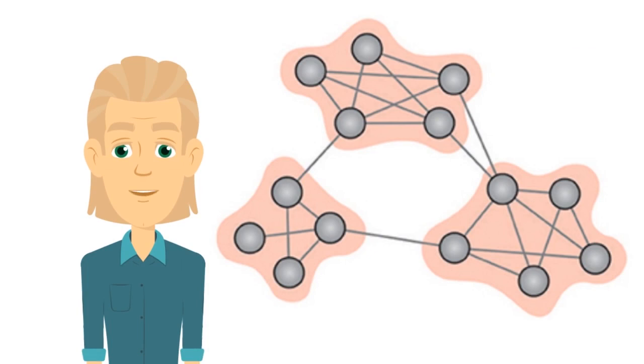Brain modularity is a balance between strong and weak connections - strong connections in some communities of neurons with only weak connections between them.